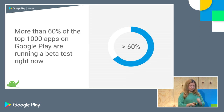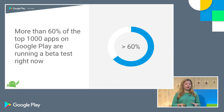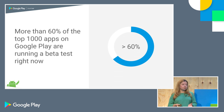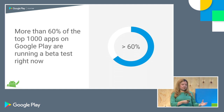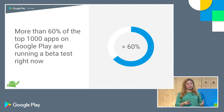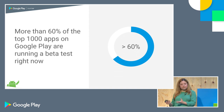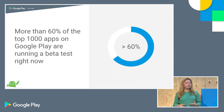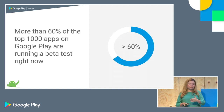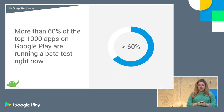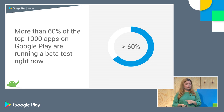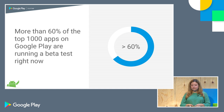More than 60% of the top 1,000 apps on Google Play are running a beta test right now — it's been a very popular tool with great developer feedback. You can run a closed beta with a very limited audience, or an open beta with a much wider audience to get more feedback. I'll be doing office hours later today and I'm happy to answer any questions about the specifics.